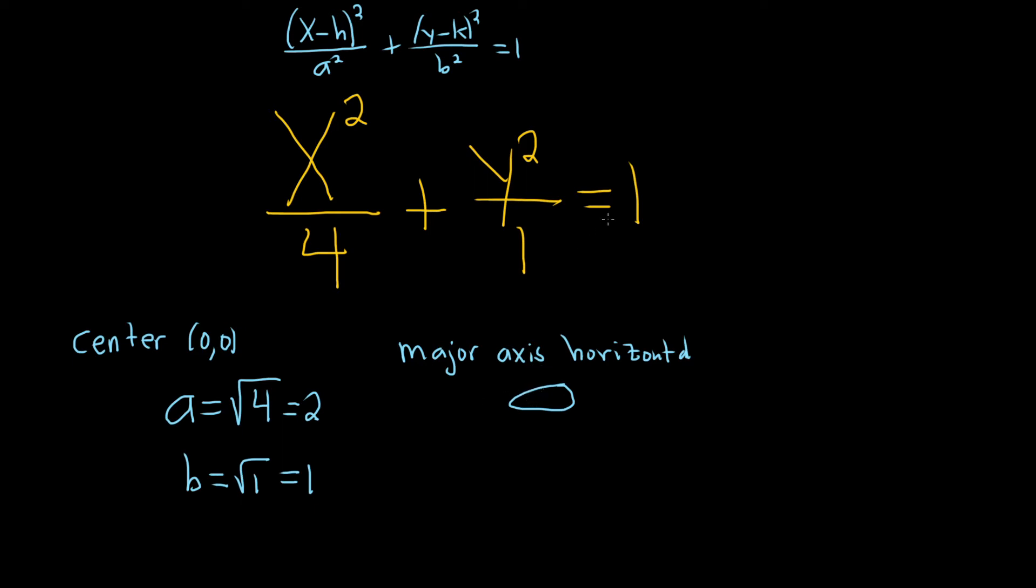All right, so now we can do a rough sketch of our ellipse. So there's the y-axis, and there's the x-axis, so x and y. And the center is 0,0.